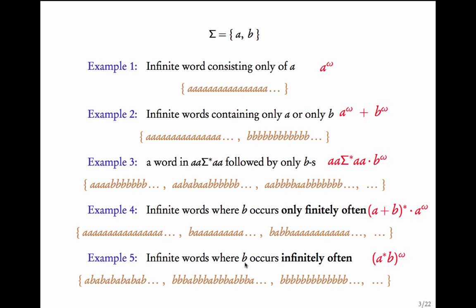Finally, infinite words where b occurs infinitely often. You see any number of a's and then you should see a b. We put this under the omega operator, which tells us that b will occur infinitely often.